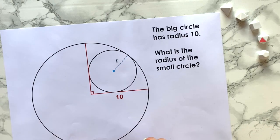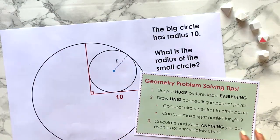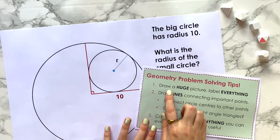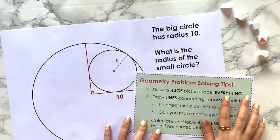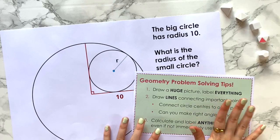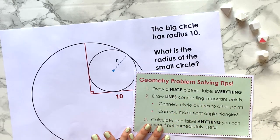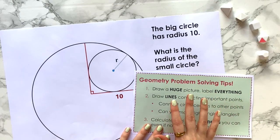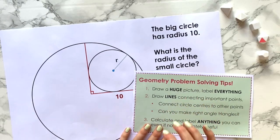When starting a geometry question like this, it can be a bit intimidating to know where to start. So to help us off, I've got some geometry problem-solving tips we can use. Step one says draw a huge picture and label everything. We already have a big picture here, but if you didn't and you just have the question, I really encourage you to get drawing as big a diagram as you can to represent the problem.